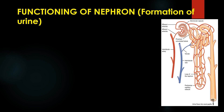After glomerulus filtration, the filtrate — the mixture of all useful substances and nitrogenous waste — moves into the tubule of the nephron. The filtrate contains useful substances like glucose, amino acids, water, and salts, as well as waste products like urea, uric acid, and excess salts. As this filtrate moves along the nephron tubule, the surrounding blood vessels reabsorb the useful substances — glucose, amino acids, necessary salts and water — back into the blood. This is called selective reabsorption.